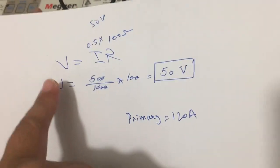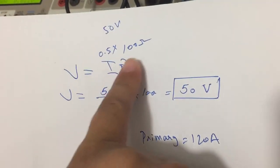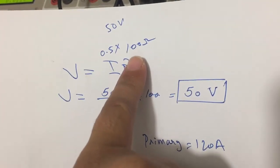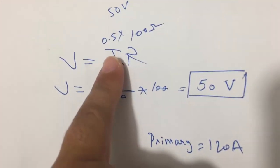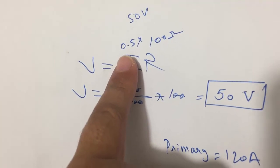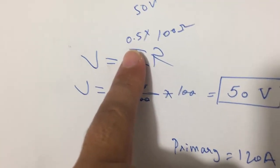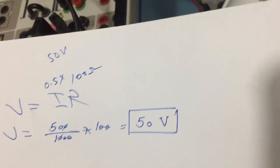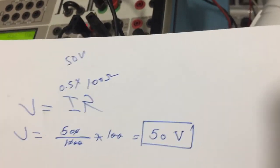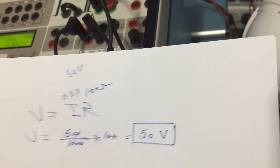Here is the formula: V equals IR. Our resistor in this circuit is 100 ohm, and the set current is 0.5 ampere, which is 500 milliampere. So V equals 0.5 times 100 equals 50 volts. By injecting 50 volts we get the set value for the REF trip. Now we will start injection by means of current.